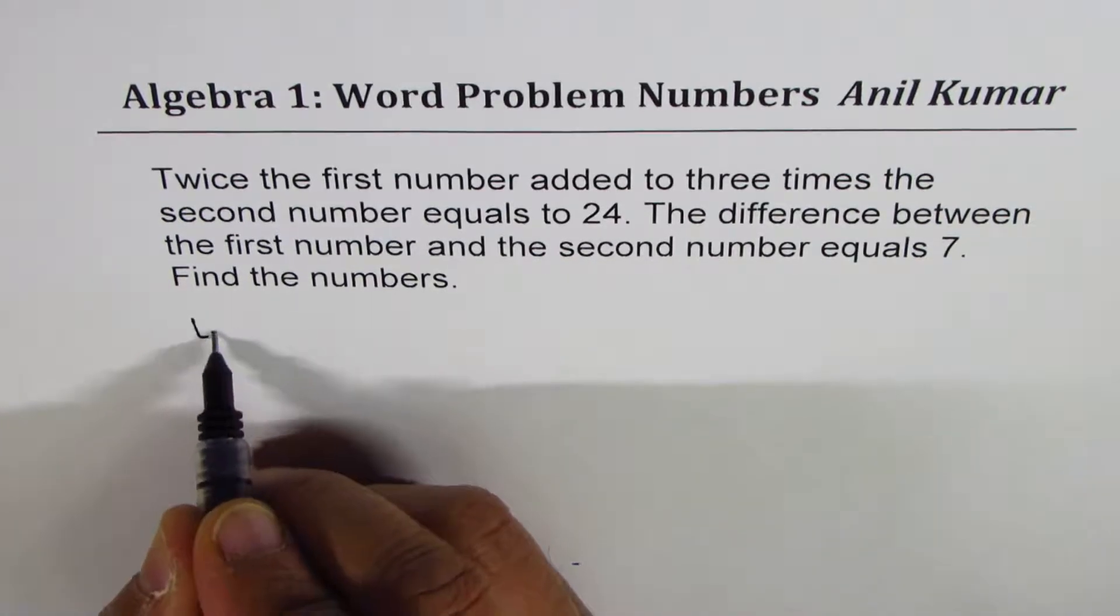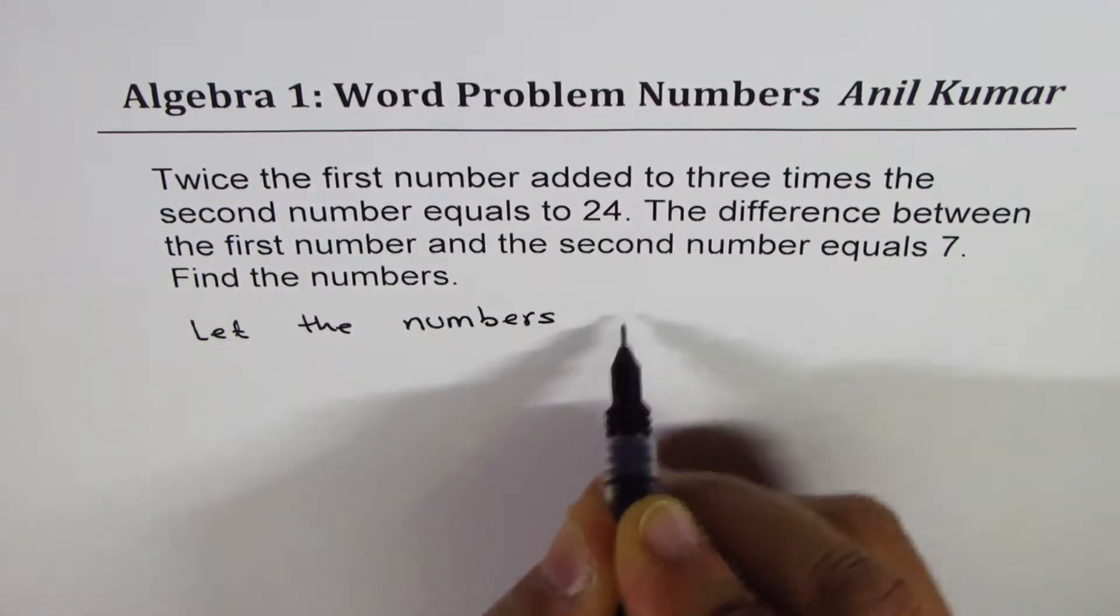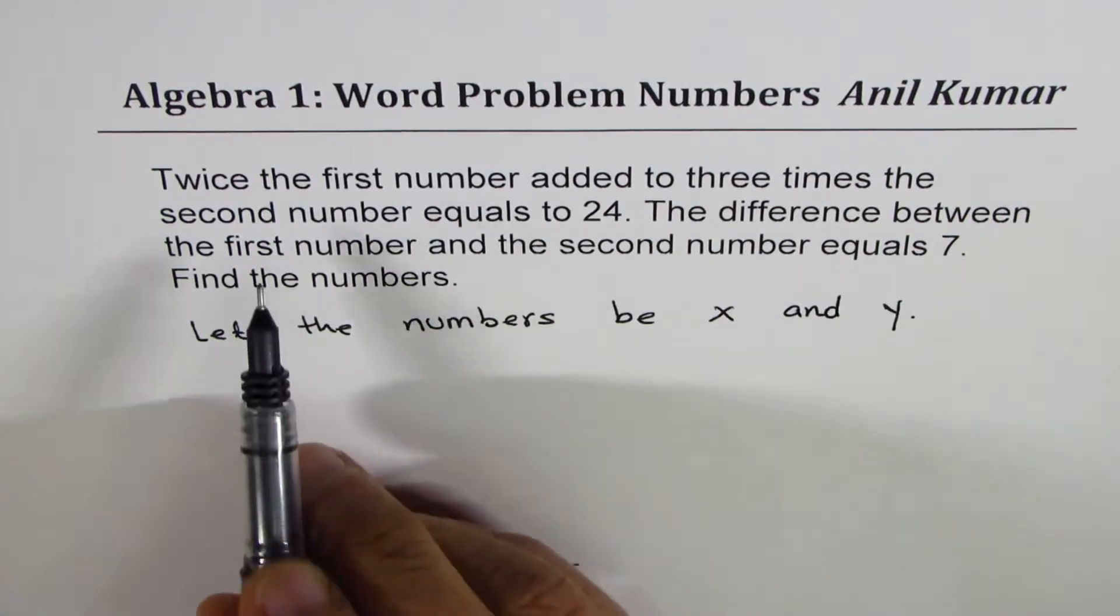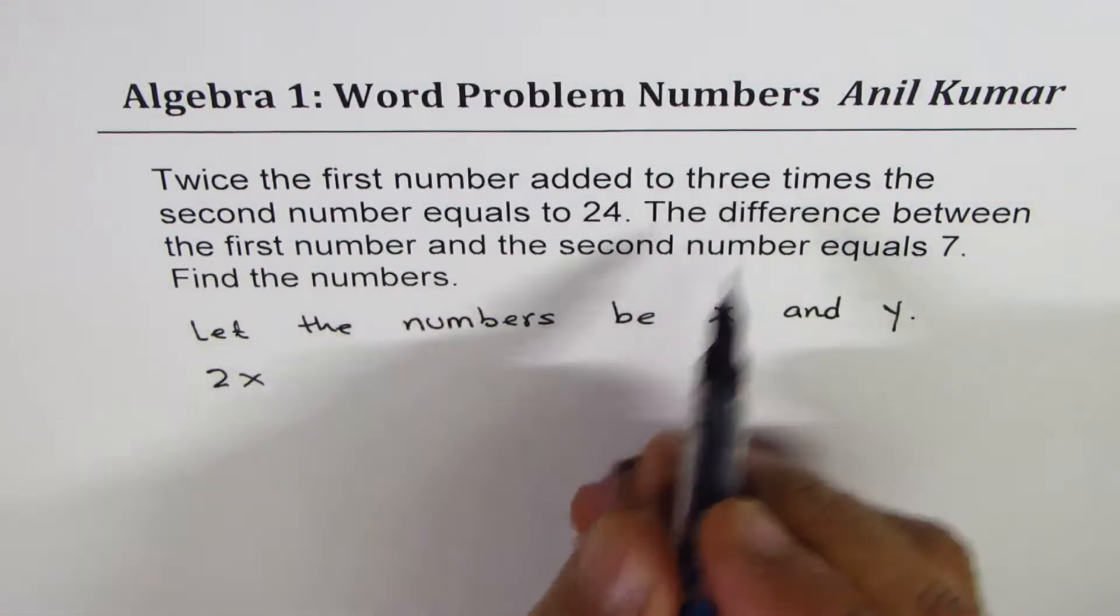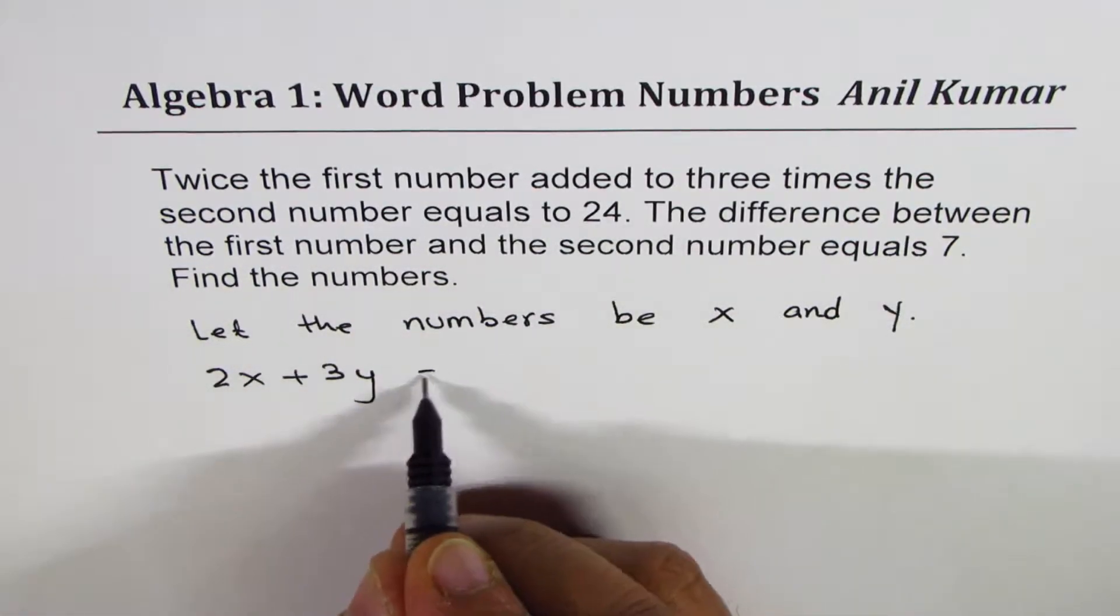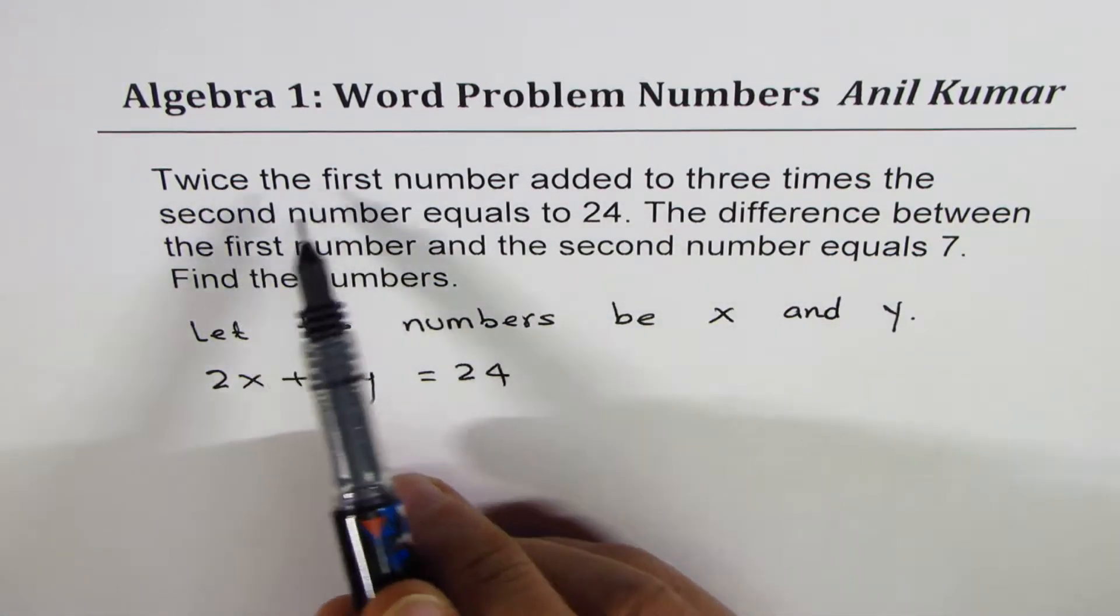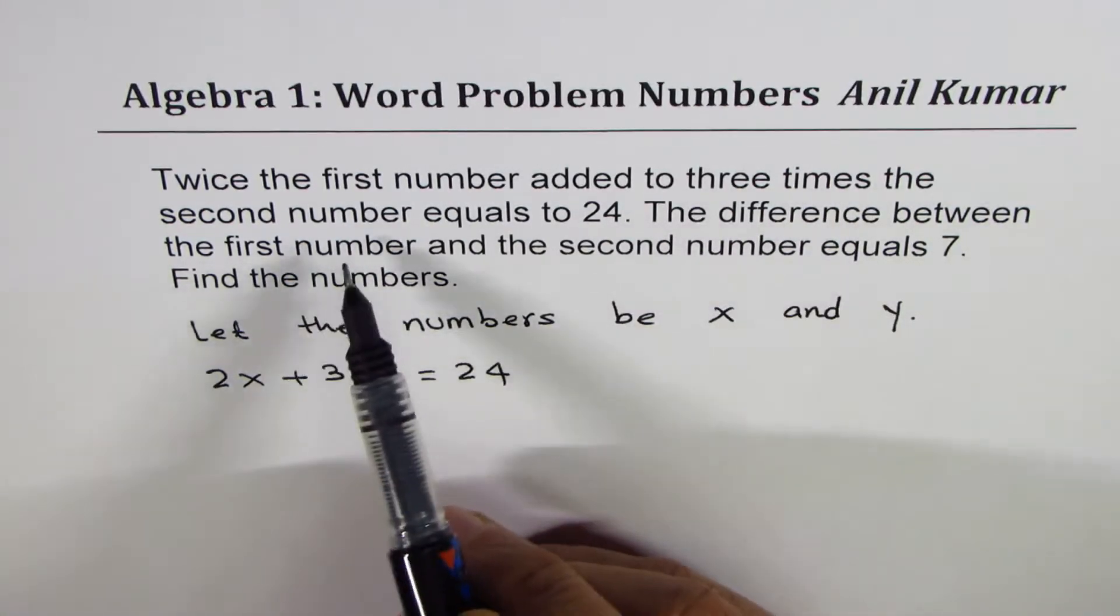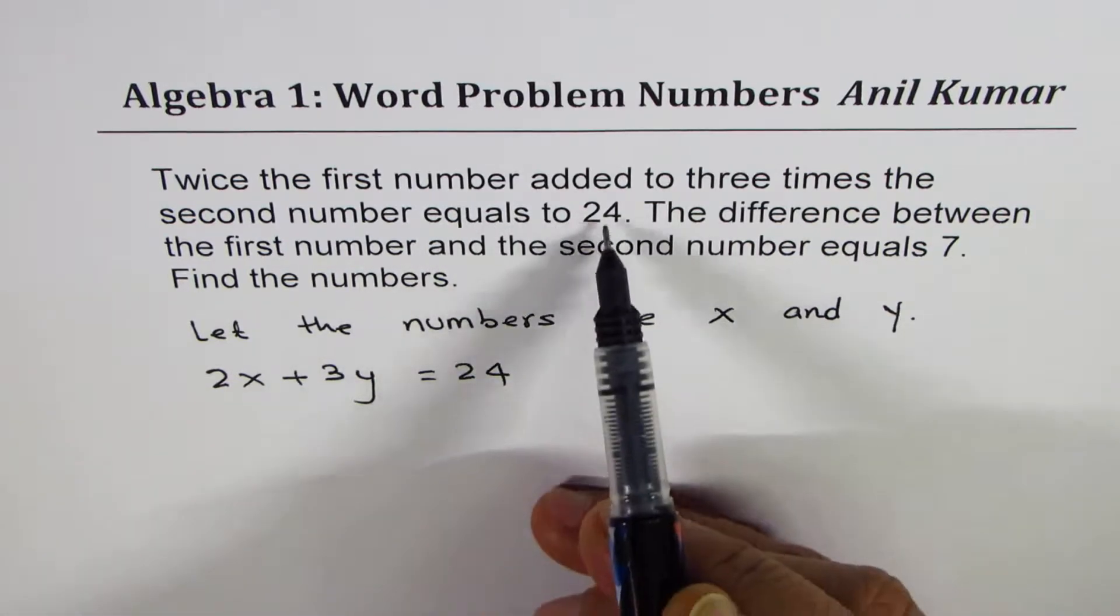So you can begin with the let statement: let the numbers be x and y. Now we can make equations. Twice the first number, that means 2x, added to three times the second number, 3y, equals 24. As you read, the equation is formed. Twice the first number 2x added to plus three times the second number 3y equals to 24.